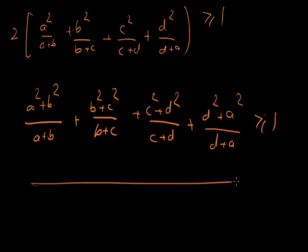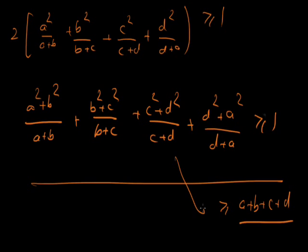Yes, we can prove that. In the previous problem we proved that this type of quantity is greater than or equal to A plus B plus C plus D. And we know that A plus B plus C plus D equals 1. Since the problem states A plus B plus C plus D equals 1, and the previous problem solved this kind of inequality, we can apply that result here to complete the proof. Thank you.